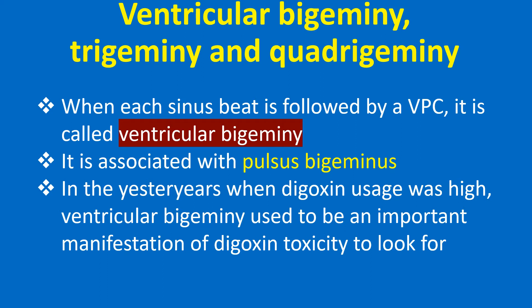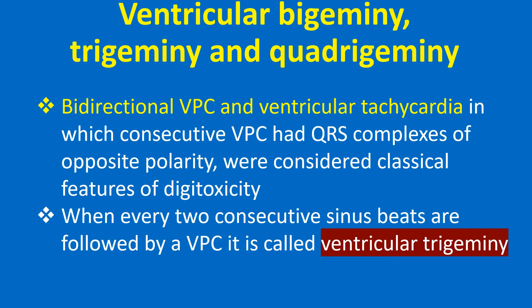Ventricular bigeminy is associated with pulsus bigeminus. In the earlier years, when digoxin usage was high, ventricular bigeminy used to be an important manifestation of digoxin toxicity to look for. Bidirectional VPC and bidirectional ventricular tachycardia, in which consecutive VPCs have QRS complexes of opposite polarity, were considered classical features of digitalis toxicity.